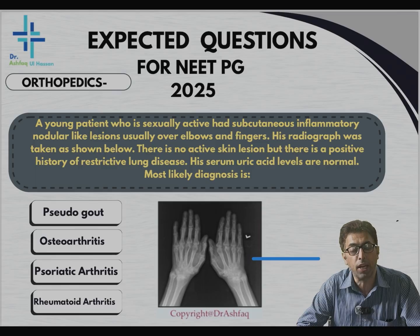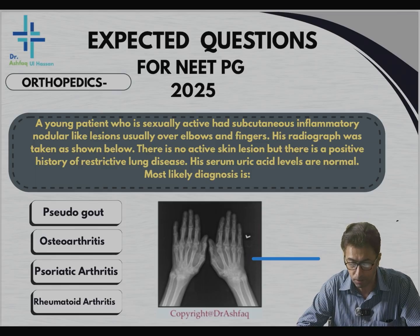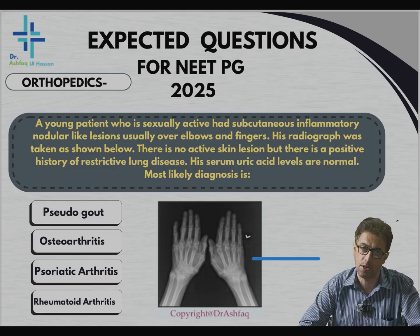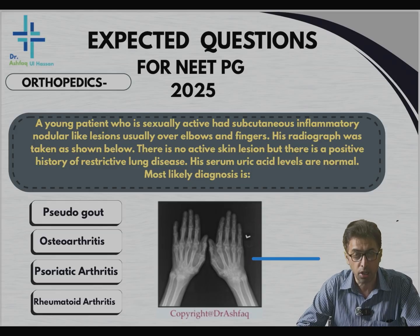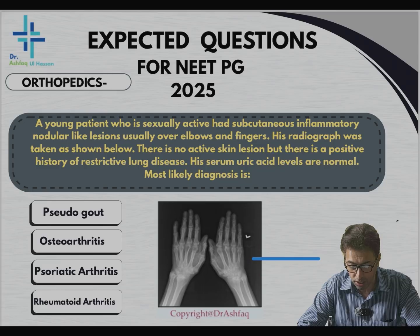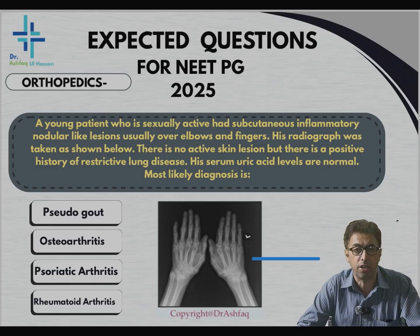His serum uric acid levels are normal, so there is no hyperuricemia. The most likely diagnosis is — scanning through the options: tophaceous gout, osteoarthritis, psoriatic arthritis, rheumatoid arthritis.